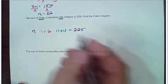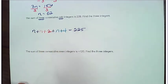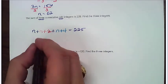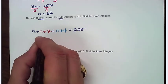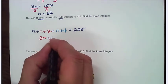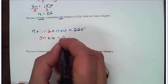I'm dealing with sum, so I need to add. And we combine our like terms, n plus n plus n. That's going to give me my 3n. 2 plus 4 gives me 6. And that's going to equal 225.